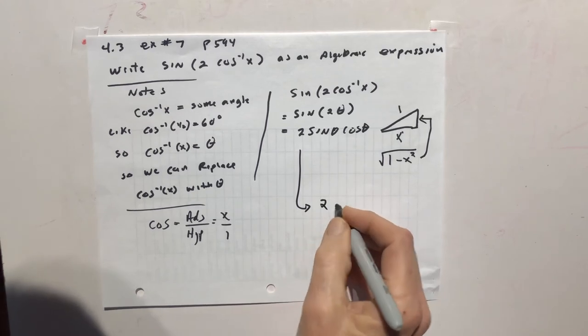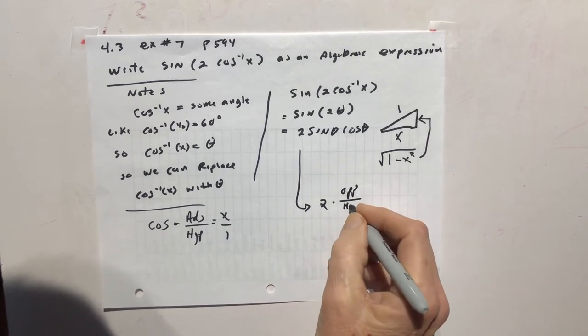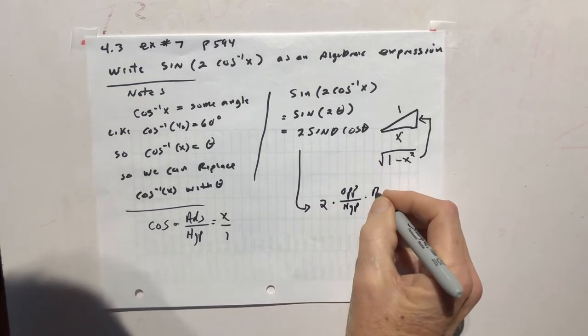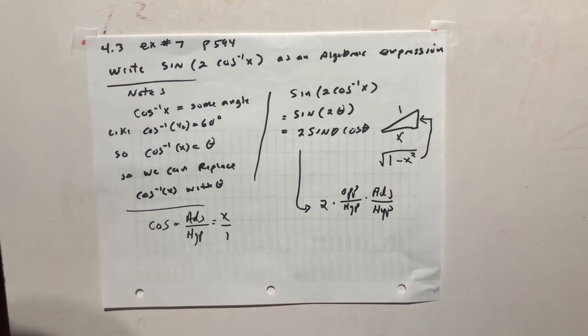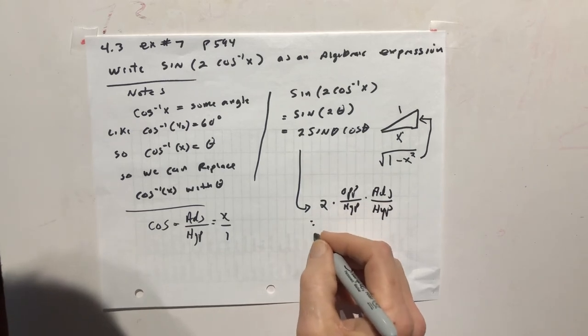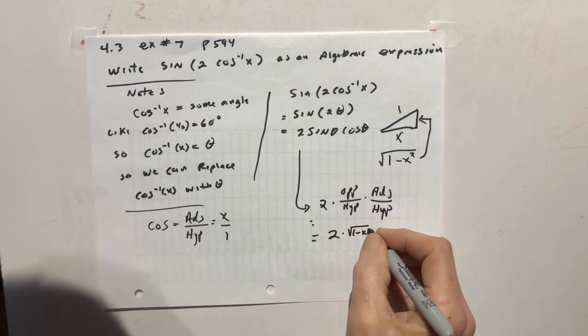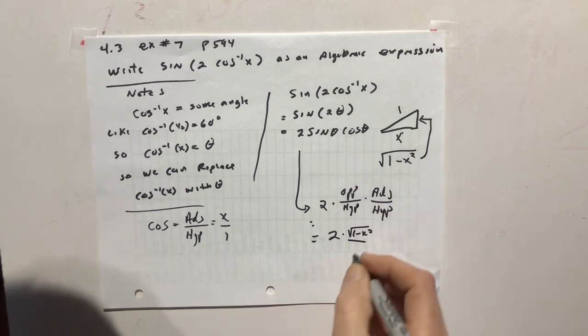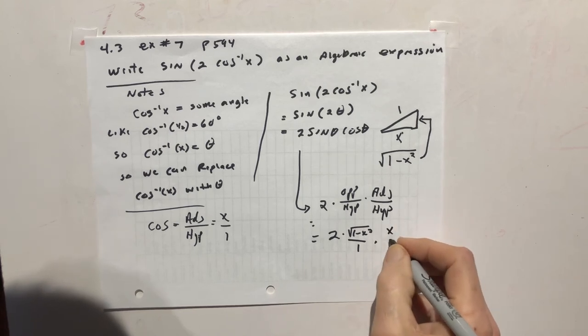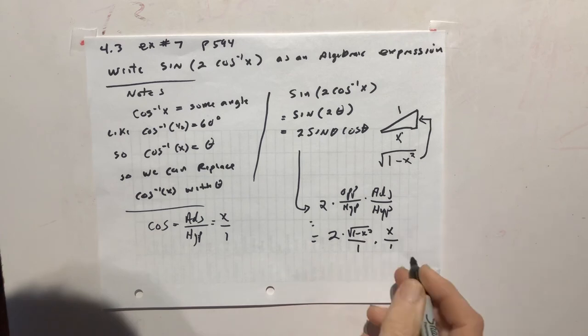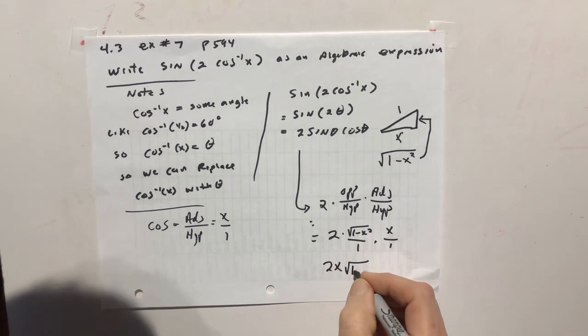It's 2 times the sine, which is opposite over hypotenuse, times cosine, which is adjacent over hypotenuse. And that is going to be 2 times opposite over hypotenuse times cosine, which is adjacent over hypotenuse. The 1's can drop off. And let's put the x out with the 2. So the final answer is 2x root 1 minus x squared.